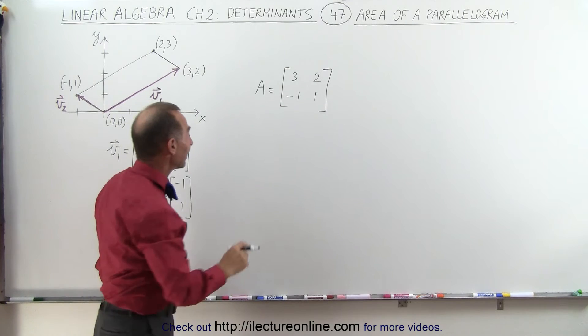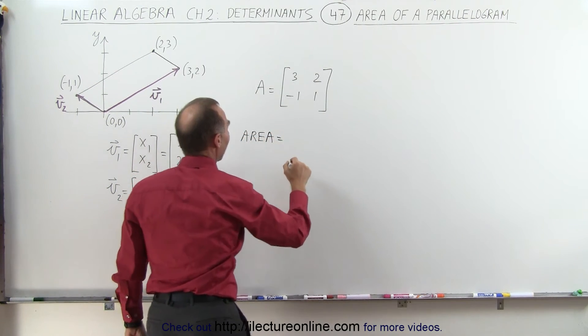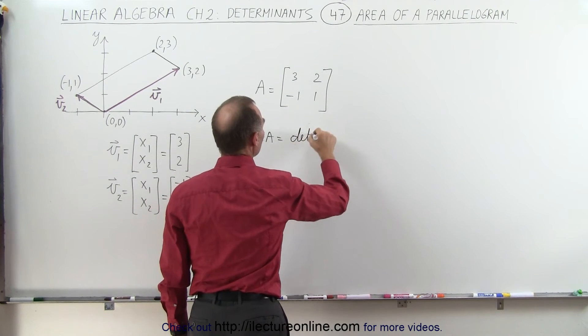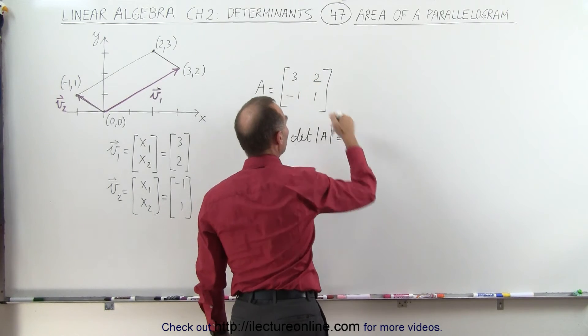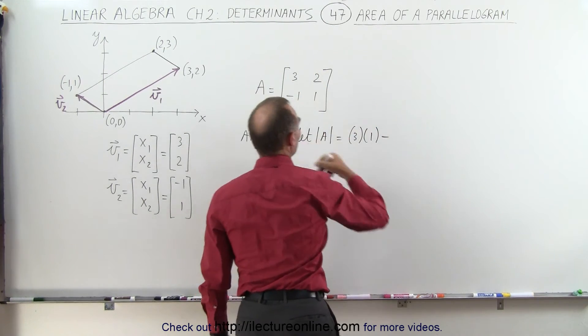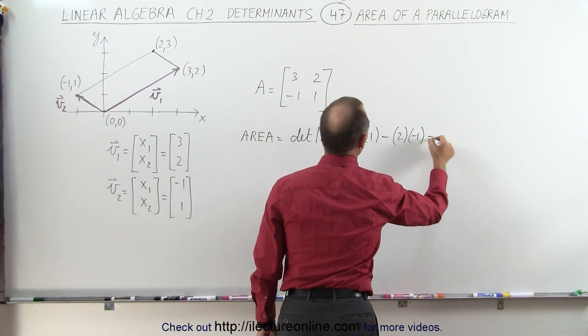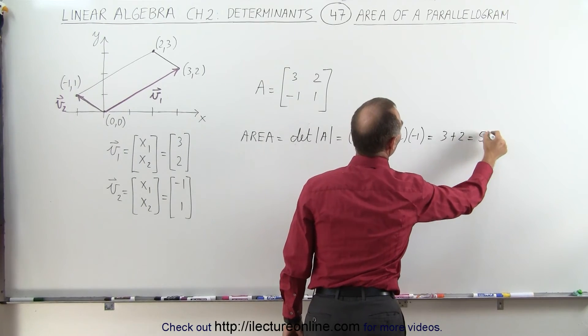It now turns out that the area of the parallelogram can be defined as the determinant of A, which is equal to the product of those two elements, 3 times 1, minus the product of those two elements, 2 and -1, which equals 3 plus 2 or 5.